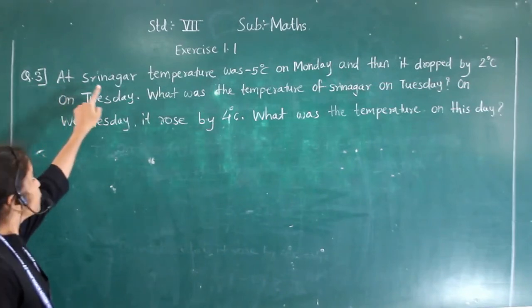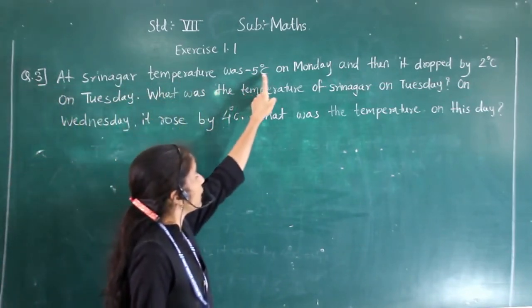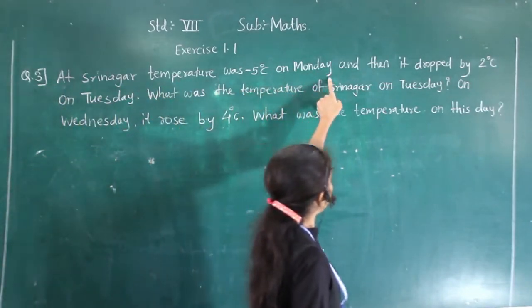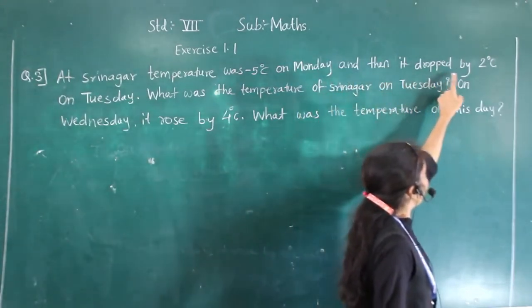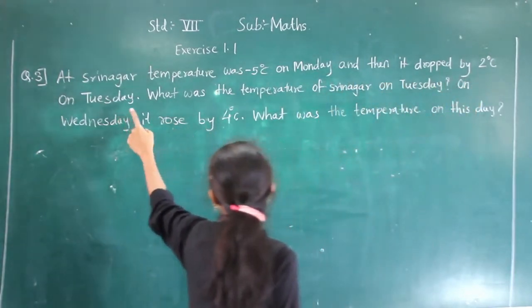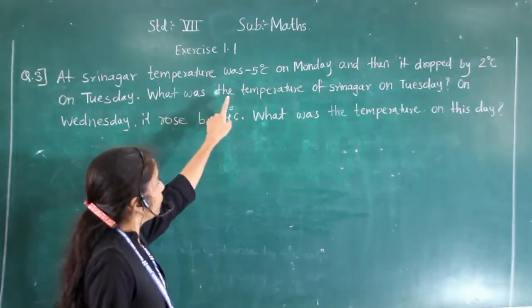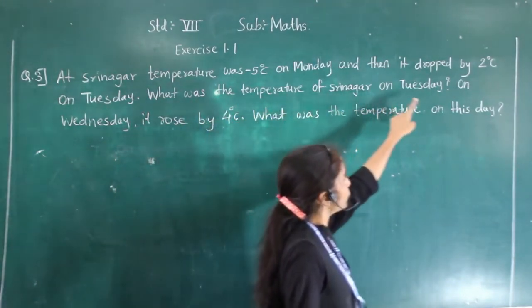Question number 3. At Shri River, the temperature was minus 5 degree Celsius on Monday. And then it dropped by 2 degree Celsius on Tuesday. What was the temperature of Shri River on Tuesday?